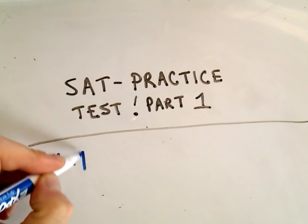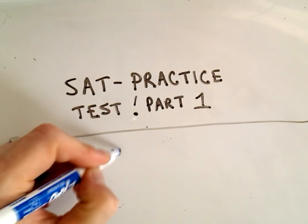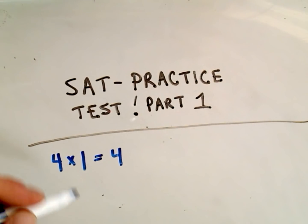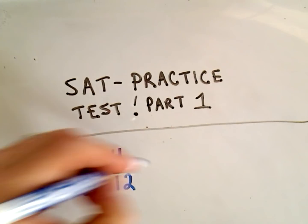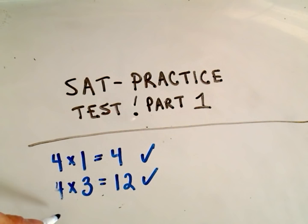Well, we could take 4 times 1, that's odd, that gives us the number 4, that's certainly less than 36. 4 times the next odd integer would be 3, 4 times 3 is 12, so that one also works.